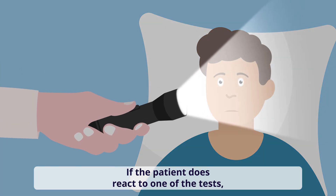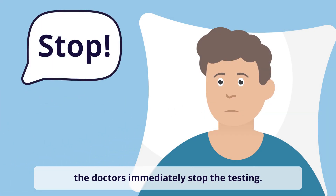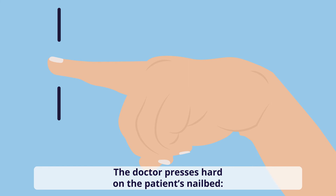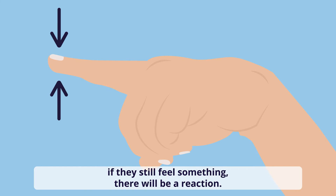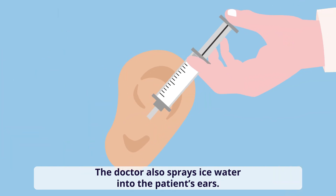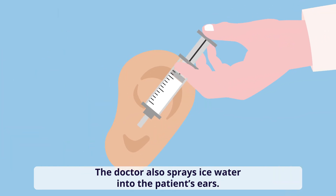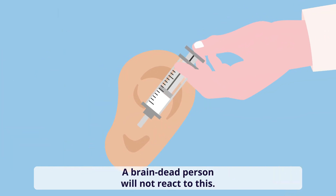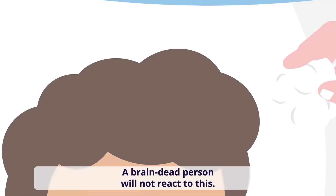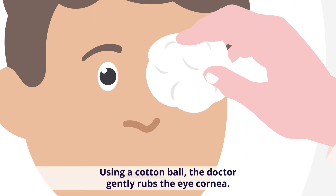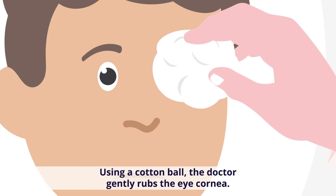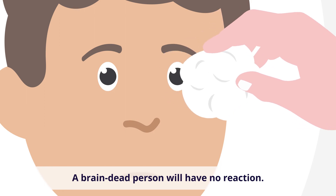If the patient does react to one of the tests, the doctors immediately stop the testing — that patient is not brain dead. The doctor presses hard on the patient's nail bed; if they still feel something, there will be a reaction. The doctor also sprays ice water into the patient's ears; a brain dead person will not react to this. Using a cotton ball, the doctor gently rubs the eye cornea — a brain dead person will have no reaction.